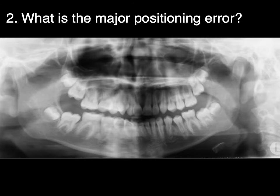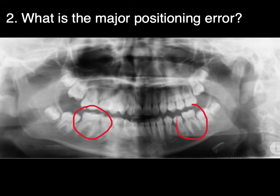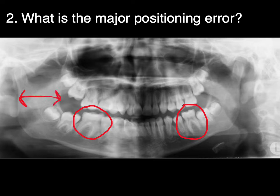Let's look at another one. What is the major positioning error? What jumps out at me is the size of this monster molar — is it really that big on one side versus the other? No. So if we're looking at problems with the mid-sagittal plane, left or right, looking at the molar teeth is a great way to spot it, but also look at the ramus and how thick this ramus is compared to the contralateral side.